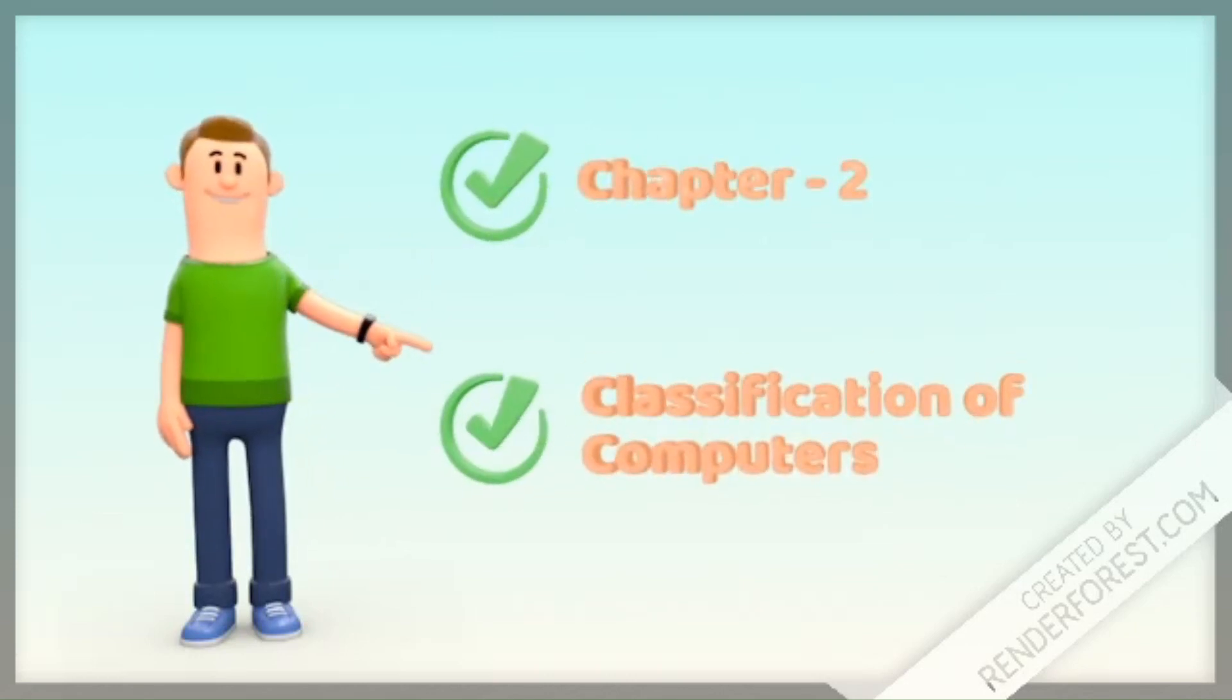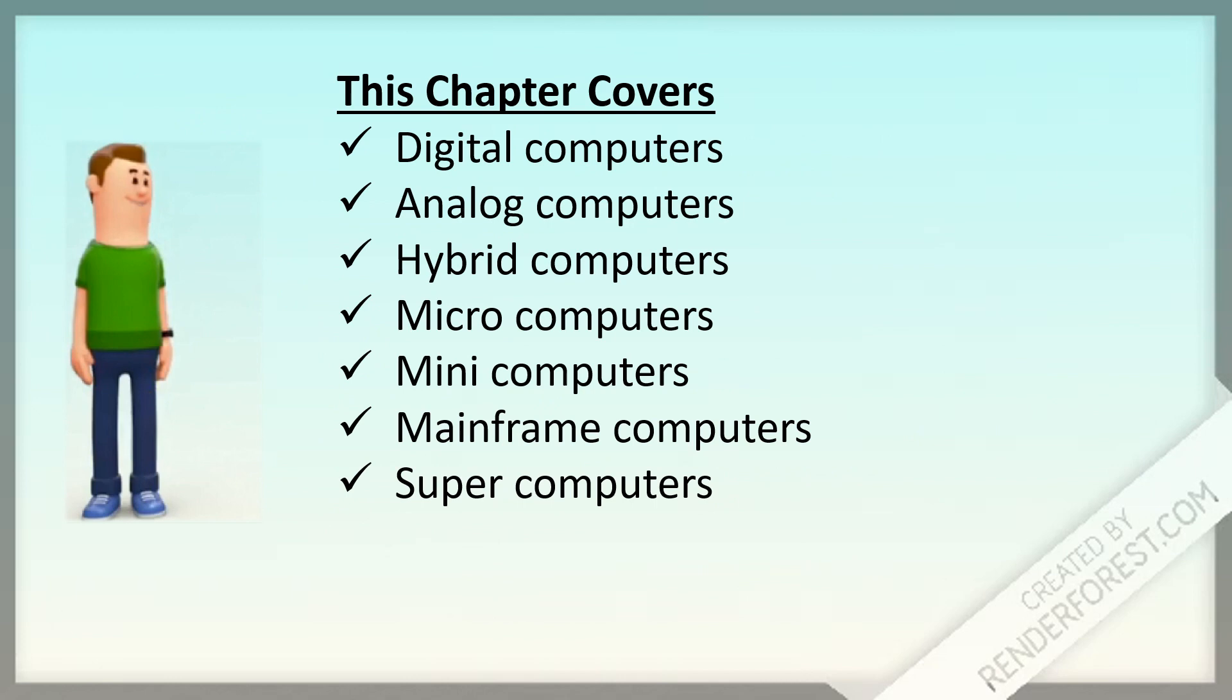Chapter 2: Classification of Computers. This chapter covers Digital Computers, Analog Computers, Hybrid Computers, Microcomputers, Mini Computers, Mainframe Computers, and Supercomputers.